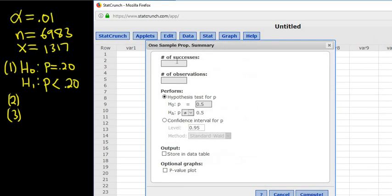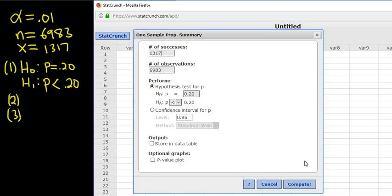So with summary, successes in this problem is 1317. Observations is 6983. It's P equals .20, so this needs to be .20, so we change it. And then we just have to change the inequality to less than. Everything looks good. I'm going to go ahead and click Compute.